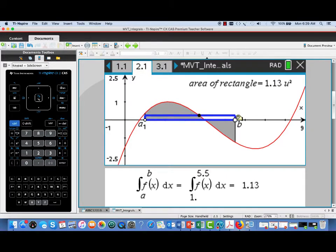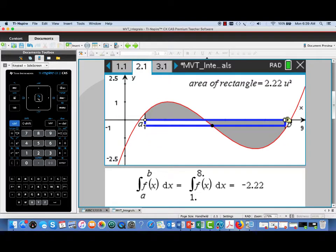Now I'm going to move the value b to the right. And I'm moving it so far that we're seeing some negative contributions where the graphs dip below the x-axis. So now I have a definite integral value that's negative. It's this negative 2.22.